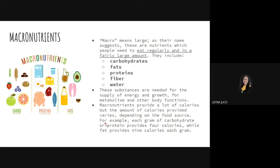For example, each gram of carbohydrate or protein provides four calories. However, each gram of fat contains nine calories. So fats provide more calories per gram compared to carbohydrates or protein, which provide only four calories per gram. Depending on the type of food consumed, even equal amounts can provide very different calorie numbers.